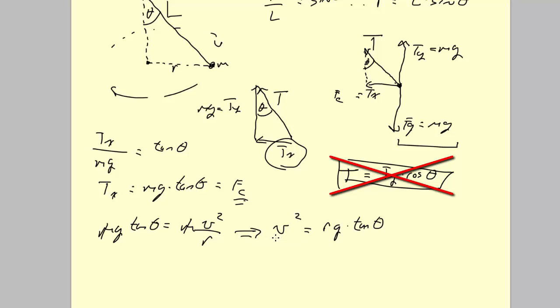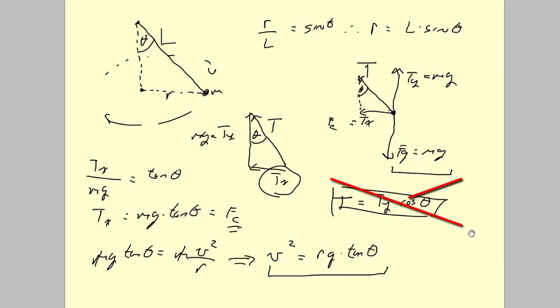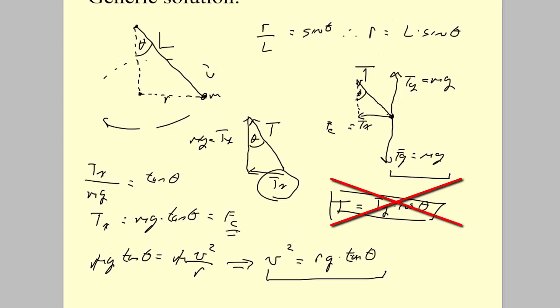And so taking the square root of that, we can get the velocity of the mass. So the main point here is that by looking at the situation without numbers, looking at it symbolically, we can see that the mass does not matter. In the sense that the mass does not affect the speed of the orbiting object.